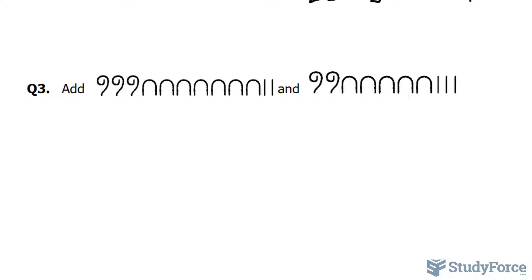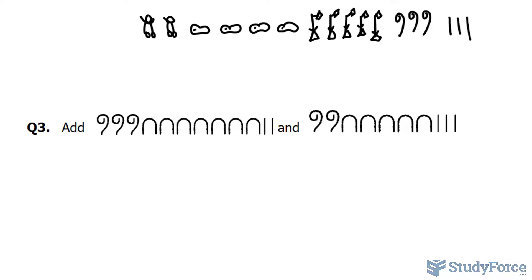In question number three, we are expected now to add two numbers that are in the Egyptian numeration system. Let's begin by combining the scrolls. We'll have five of those in total. We'll have 1, 2, 3, 4, 5, 6, 7, 8, 9, 10, 11,